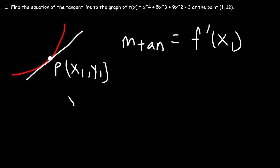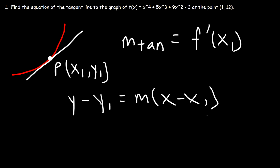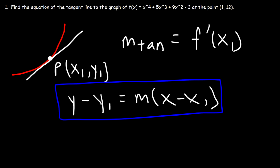Once we have those two things — the slope and the x, y coordinate of the point where the tangent line touches the curve — we can use the point-slope formula to write the equation of the tangent line.